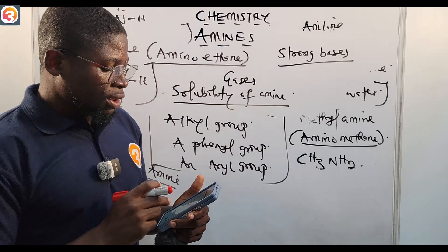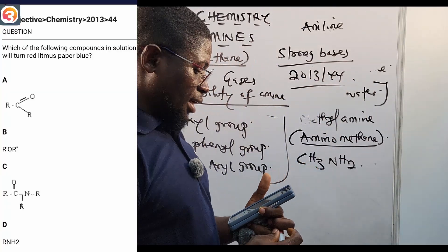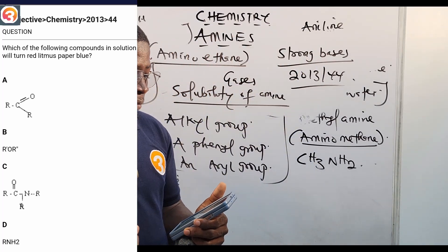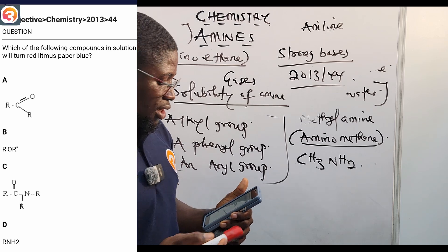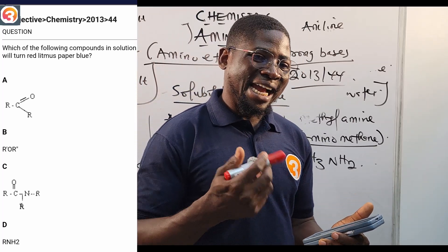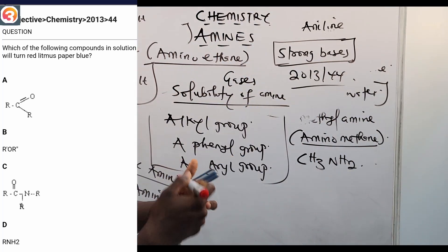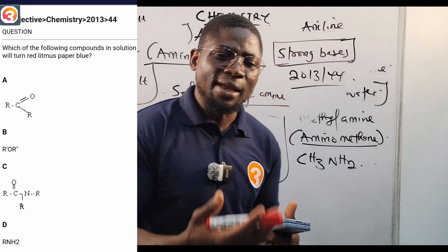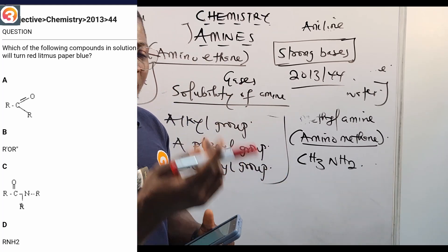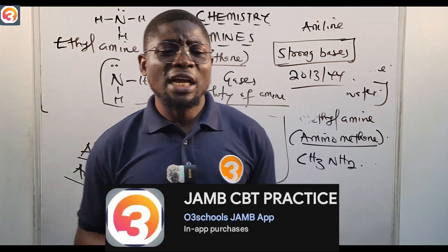Next, 2013 question number 44: which of the following compounds in solution turns red litmus paper blue? Option A is an aldehyde, B is a ketone (R-O-R), C is an amide, and D is an amine. We stated that amines are very strong bases, and one characteristic of a base is turning red litmus paper to blue. Therefore, the correct answer is D — an amine.